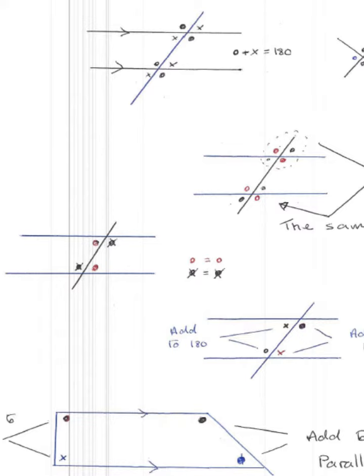The two little sets of angles, the four at the top and the four at the bottom, are basically equal to one another, and we call these corresponding angles.